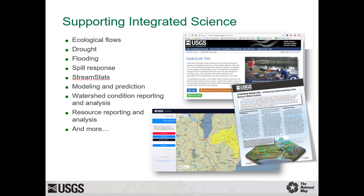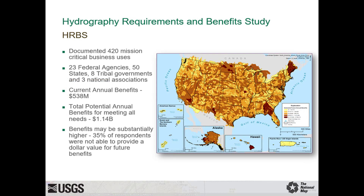In 2016, the USGS released a report on the Hydrography Requirements and Benefits Study, abbreviated HRBS. HRBS was initiated to review and understand current and future user requirements and the associated benefits for improving hydrodata. An online questionnaire was completed by over 500 USGS hydrography data users from local, state, federal, tribal, non-profit, and private sector organizations. This image shows some details on the current and potential benefits that can be realized from hydrodata. More information on HRBS plus access to the complete report can be found on the National Map homepage.